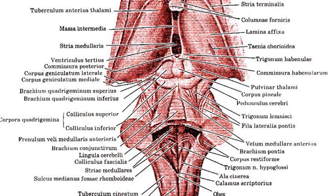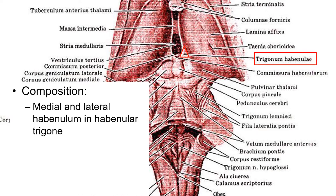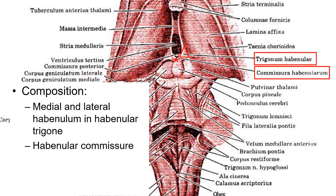This is a more close-up, top-down view of the habenulum. To orient you: we have the thalamus on both sides, the pineal gland, the superior colliculus, the inferior colliculus, and the rest of the brainstem. As we discussed, the habenular trigone sits just lateral on each side of the pineal gland. The composition goes as follows: we have the medial and lateral habenular nuclei around the habenular trigone, and these two structures are interconnected by the habenular commissure in the middle.